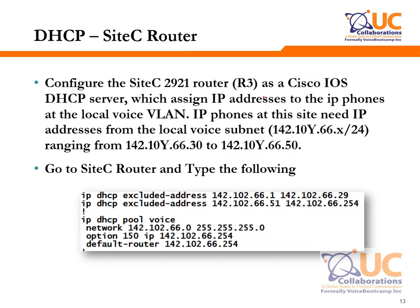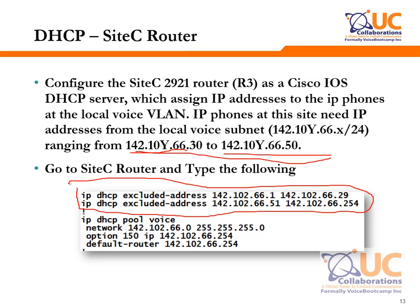On Site C, which uses Call Manager Express, configure the Cisco 2921 as an IOS DHCP server assigning addresses in the range 30 to 50. To define this range in IOS, exclude the addresses outside the range — exclude 1 to 29 and 51 to 254 — leaving 30 to 50 available. Then create a DHCP pool defining the network address, subnet mask, option 150 pointing to the Call Manager Express IP address, and the default gateway for the IP phones. Once done, phones should begin receiving IP addresses from the router.